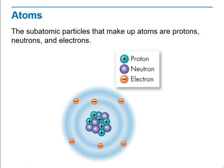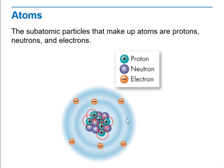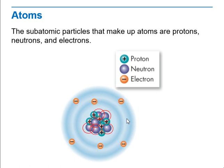We have the atoms. The subatomic particles that make up atoms are protons, neutrons, and electrons. As you can see here, protons are positively charged, neutrons meaning that they do not have a charge, and electrons are negatively charged particles. Here we have the protons, here we have the electrons, and here we have the neutrons.